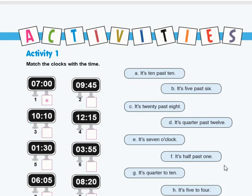Number four. What's the time in number four? It's D and it's quarter past twelve. How about number five? What's the time in number five? It's half past one and the answer is F.